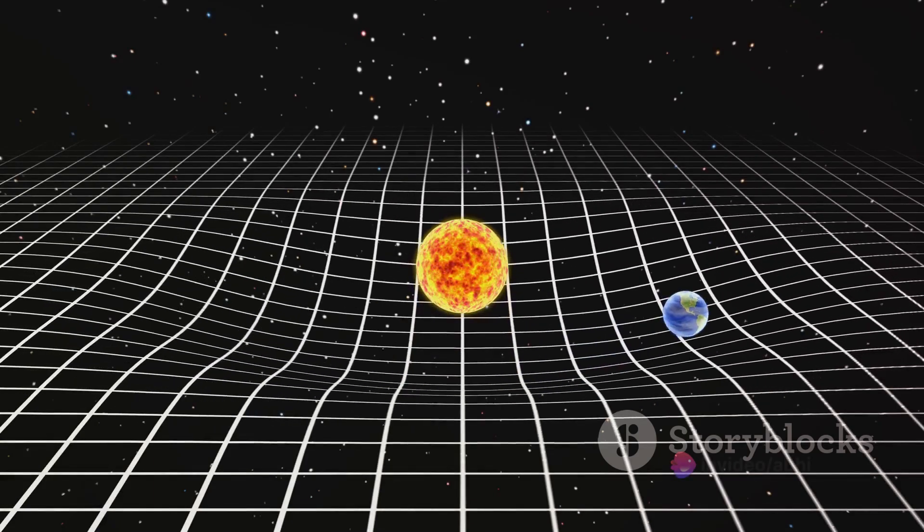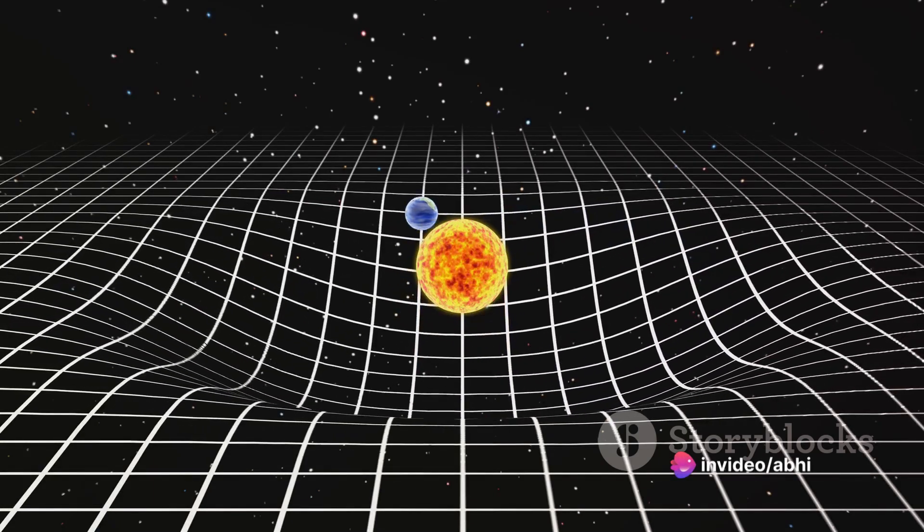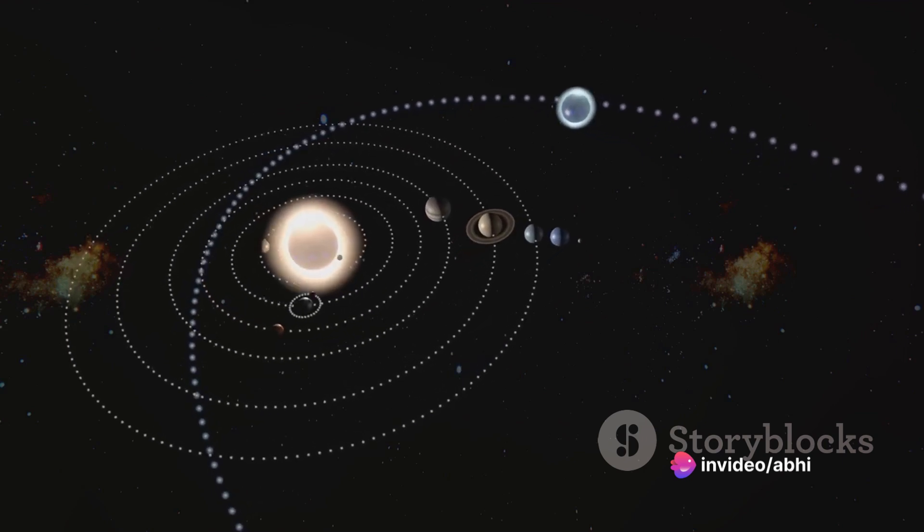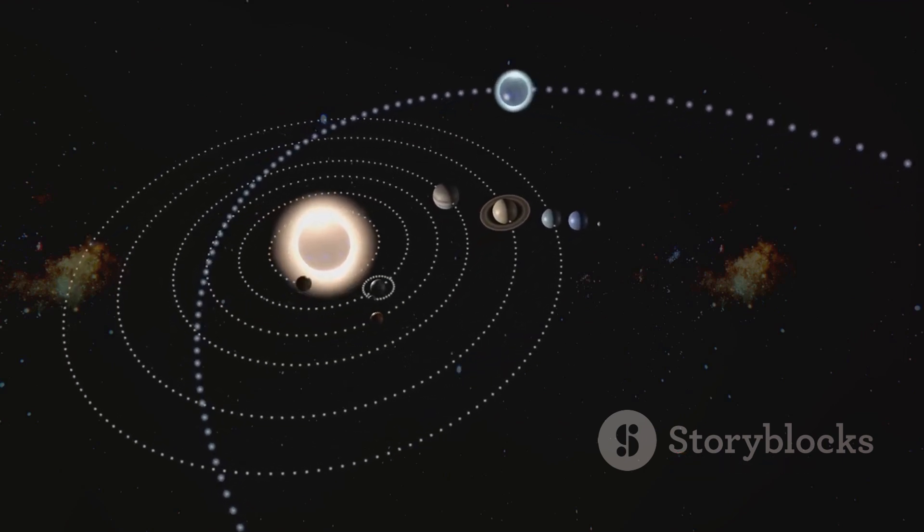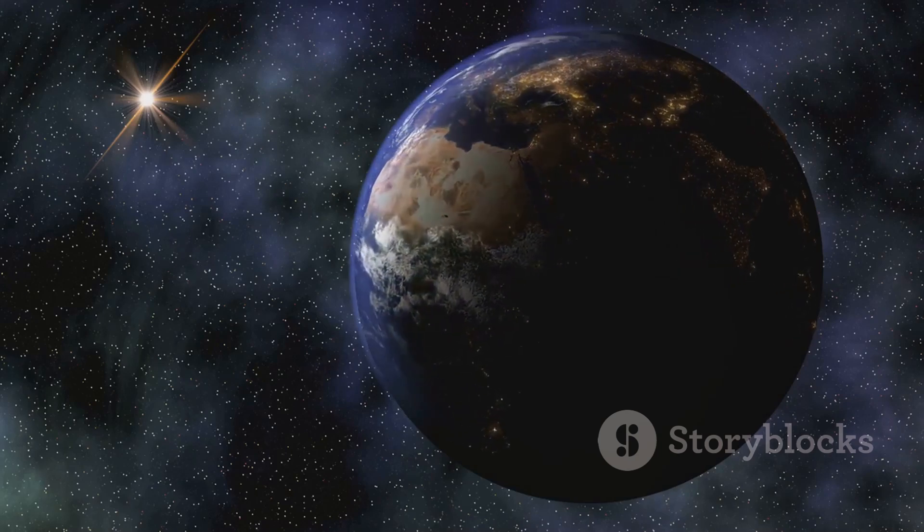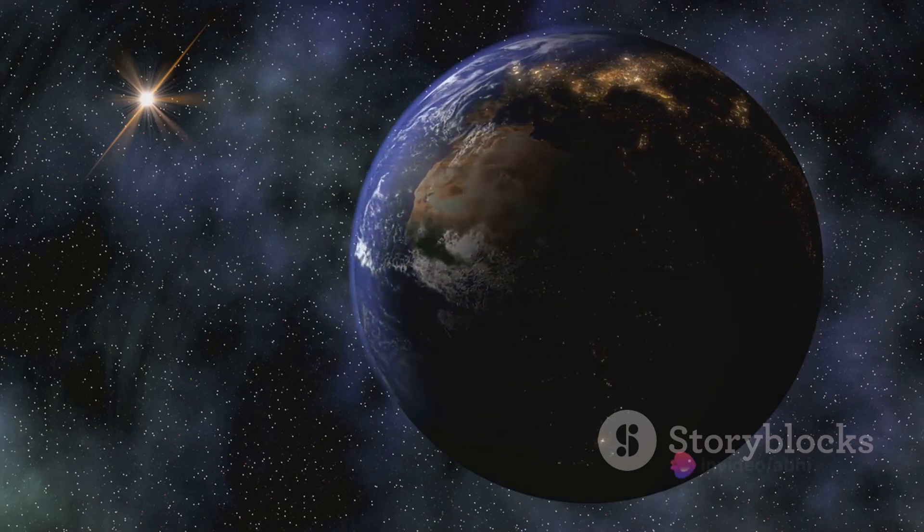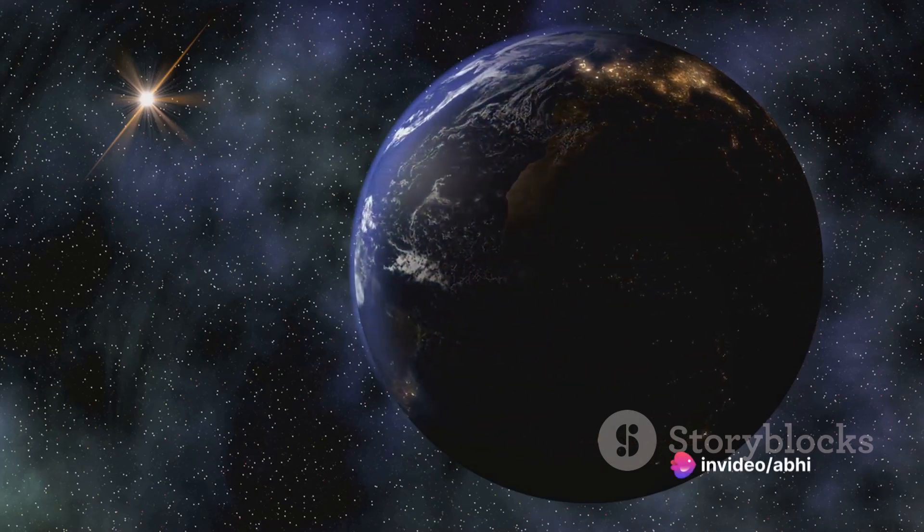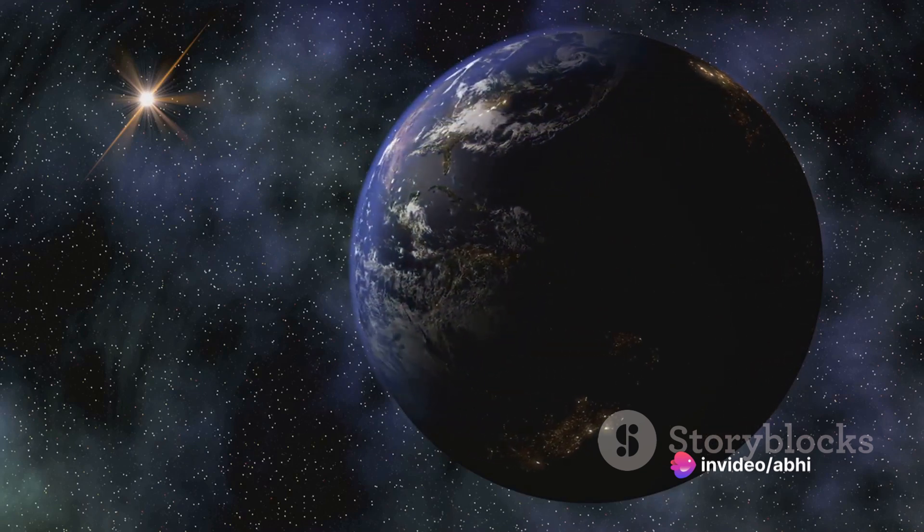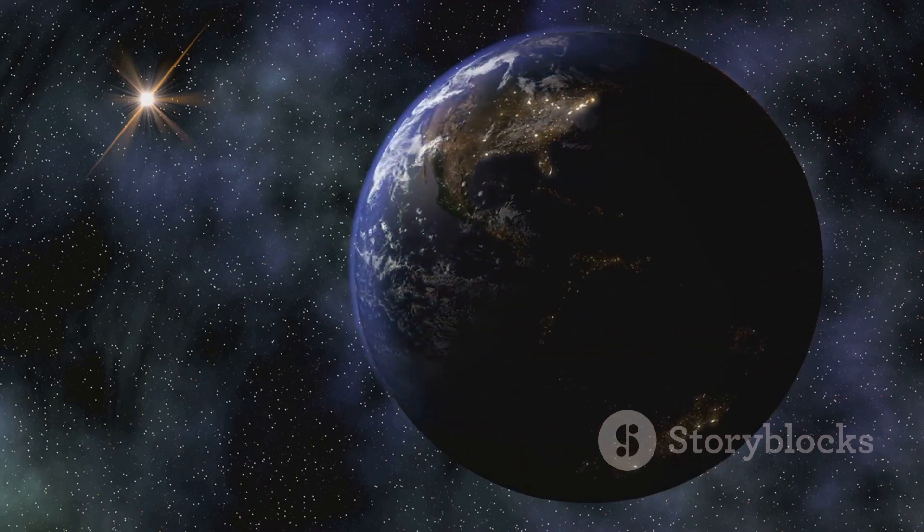At the same time, the law posits that the line joining the planet and the Sun sweeps out equal areas in equal times. So, when the planet is further from the Sun and moving slower, it covers a larger radial distance, but a smaller arc. Conversely, when it is closer and moving faster, it covers a smaller radial distance, but a larger arc.